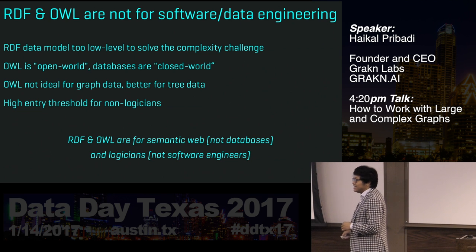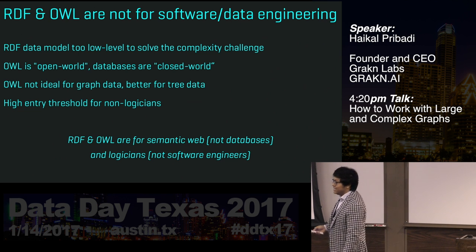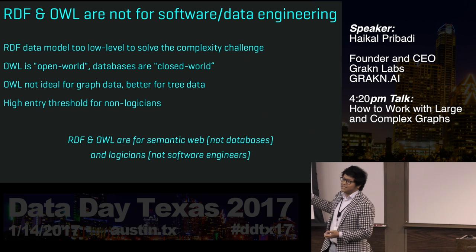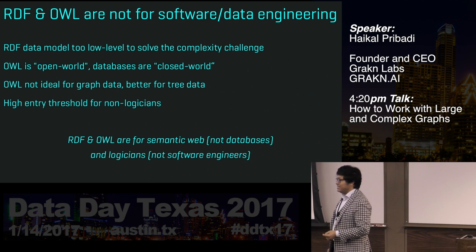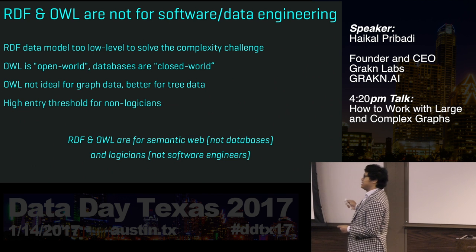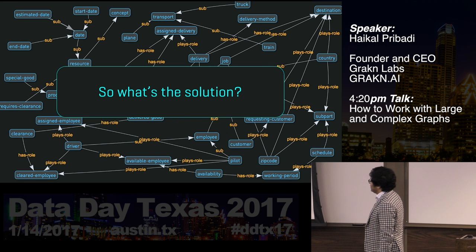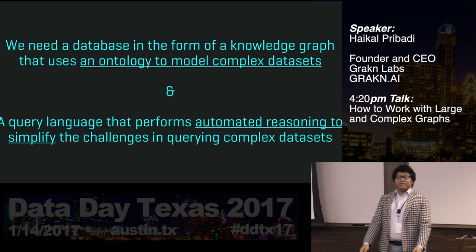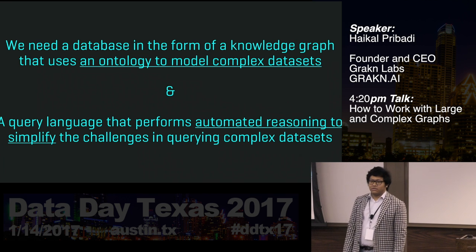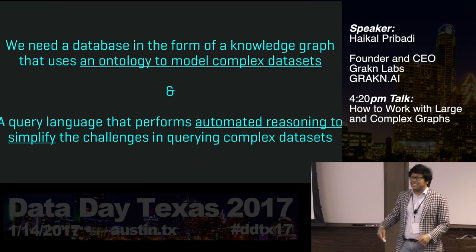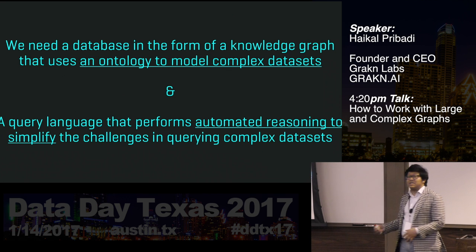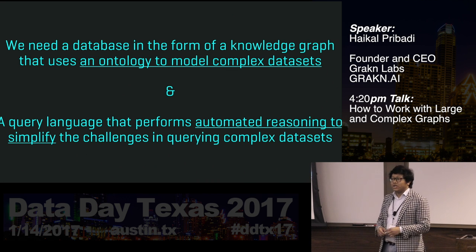An audience member asks about higher-order RDF extensions. The speaker responds: those still follow the RDF data model, and it's the data model itself that doesn't allow us to model the things we want. So what is the solution? We realized we needed a database in the form of a knowledge graph that uses an ontology as the data model, and then a query language that takes advantage of this ontology — all of the type hierarchies, the relationship structures, and the business rules in it — to perform automated reasoning that simplifies the effort of actually querying your database.